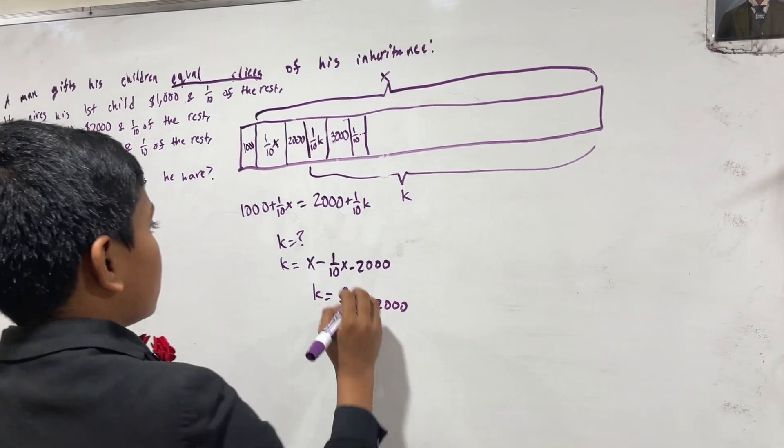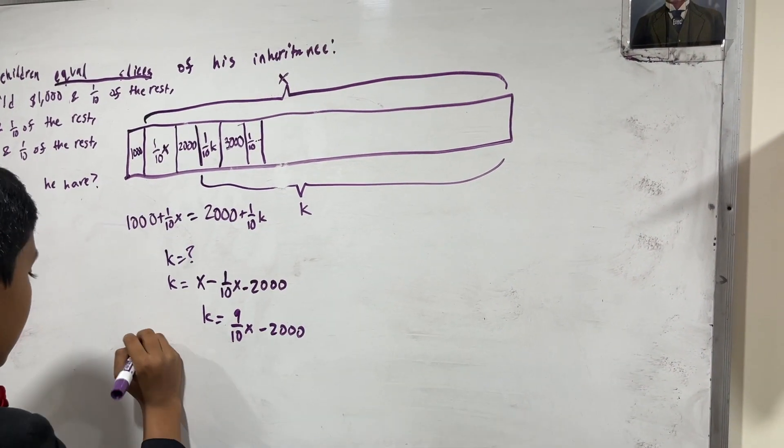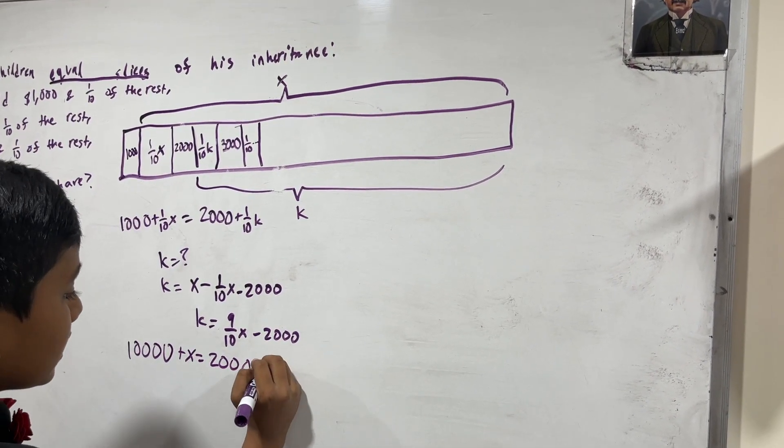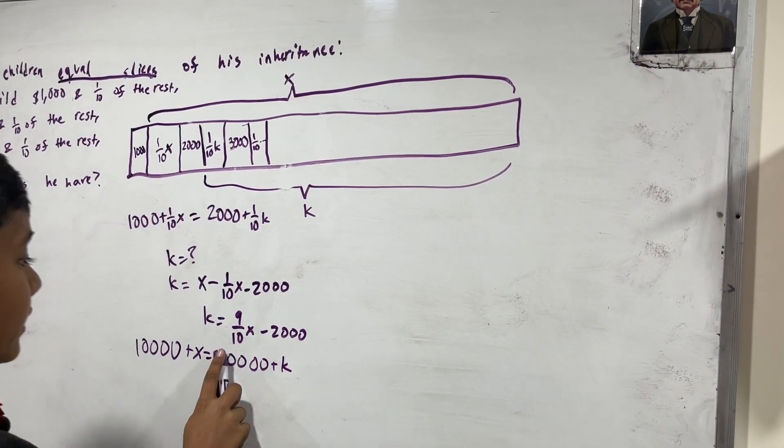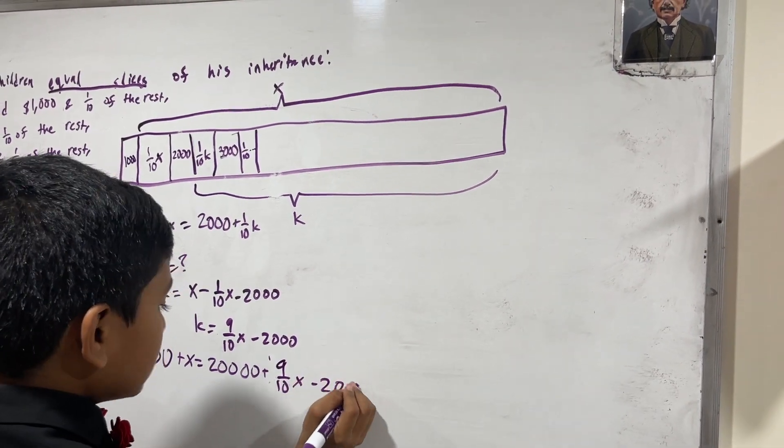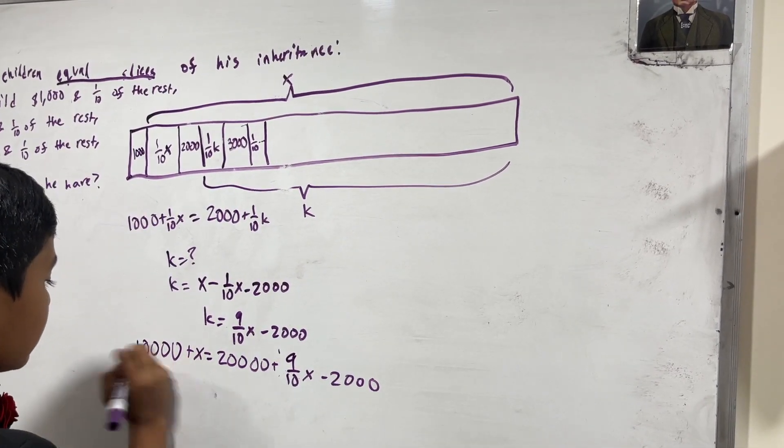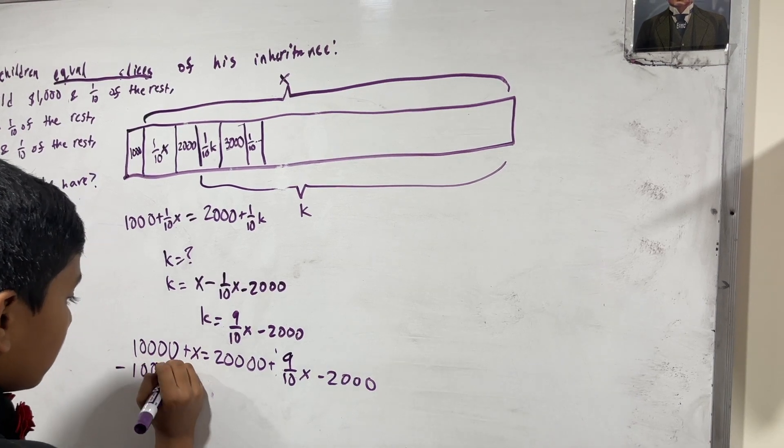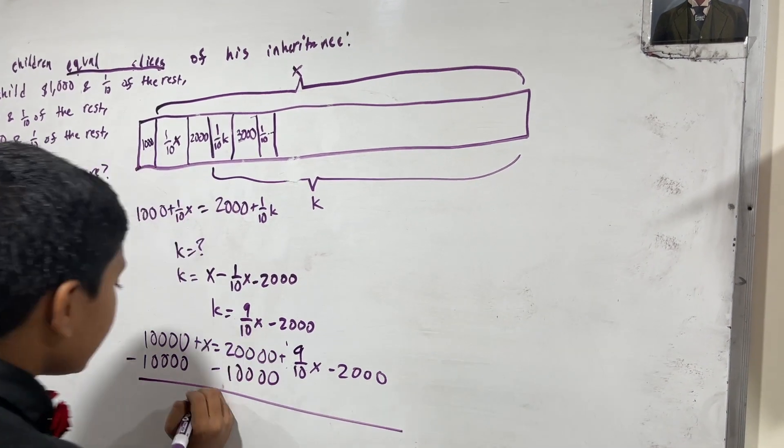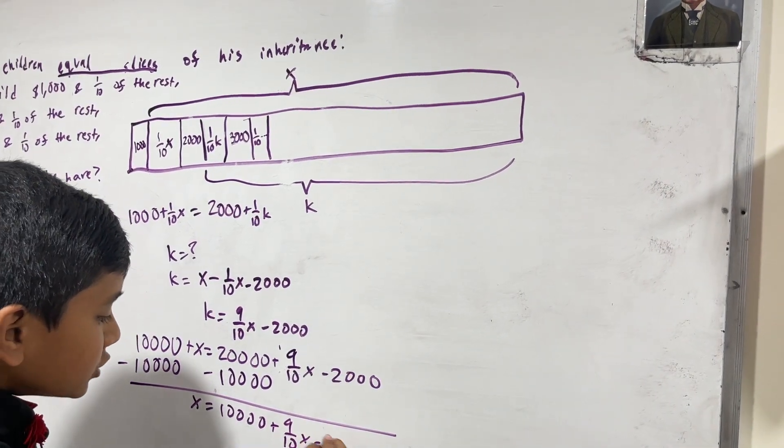So, now let's multiply everything here by ten. That gives us ten thousand plus X equals twenty thousand plus K. So, let's write down K. K is nine over ten X minus two thousand. So, ten thousand plus X, let's actually subtract ten thousand from both sides. And that gives us X is equal to ten thousand plus nine tenths X minus two thousand.